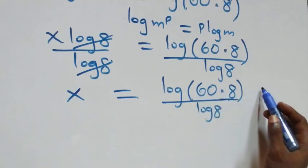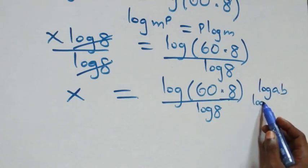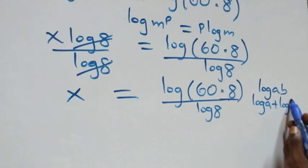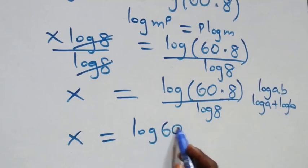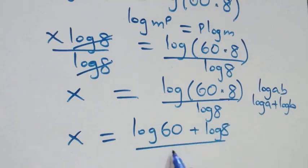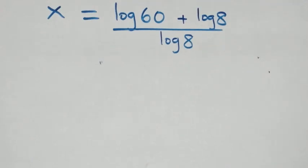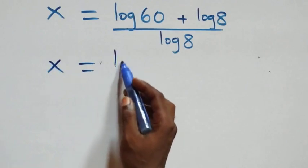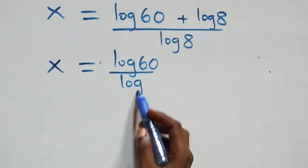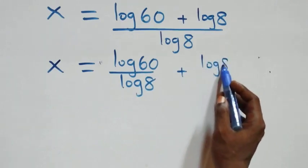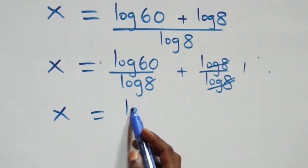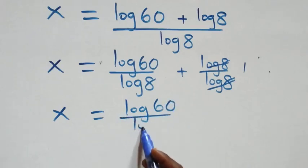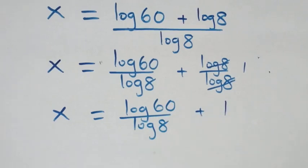What we have here follows from the law of logarithms: log(a times b) is the same as log a plus log b. So this becomes x equals log 60 plus log 8, all over log 8. We separate this into two fractions: x equals log 60 over log 8, plus log 8 over log 8. Log 8 over log 8 cancels to give 1, so x equals log 60 over log 8 plus 1.